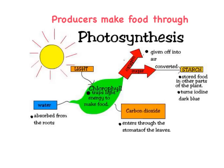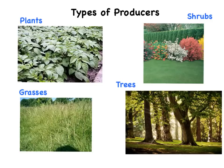This is important to the other organisms in the ecosystem, because this is how they get the oxygen that they need to breathe. Trees, plants, shrubs, and different types of grasses are all examples of producers in different types of ecosystems.